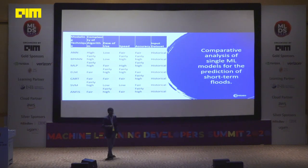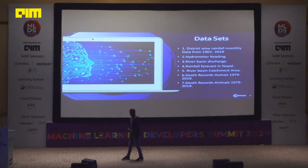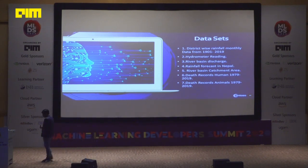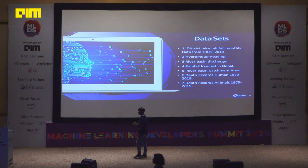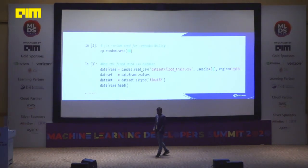The datasets we used were: district-wise monthly rainfall data from 1901 to 2019, hydrometer readings, river basin discharge data, and death records of both animals and humans — because which intensity of flood results in how many deaths is uncertain but useful as a feature. All predictions are for Bihar specifically, where we have actual data for different parts of the low-lying areas.